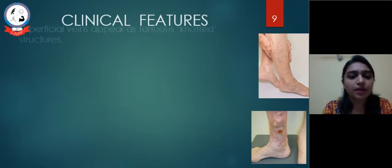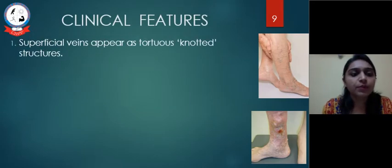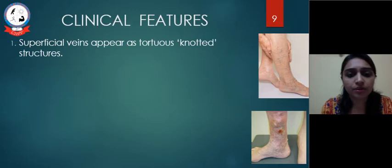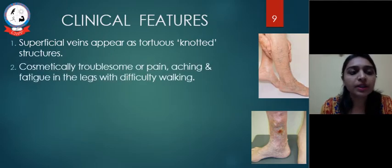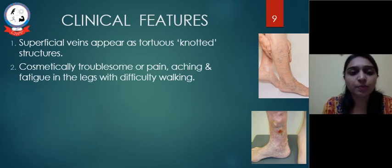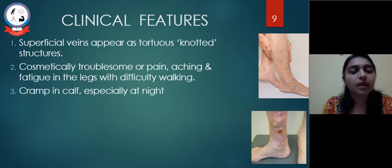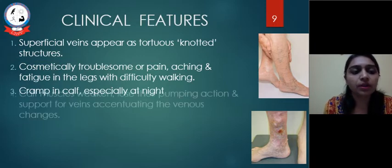Clinical features: Superficial veins appear as tortious, knotted structures. They can be cosmetically troublesome and may also cause pain, aching, and fatigue in the legs with difficulty walking. Cramp in the calf muscle, especially at night, is very common.